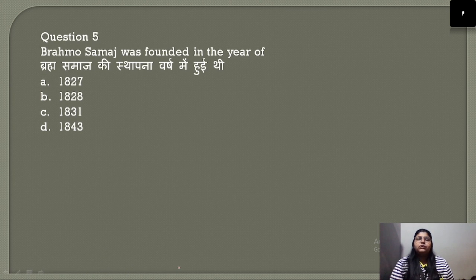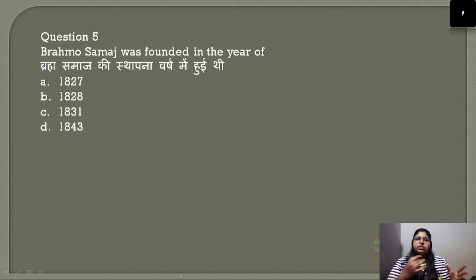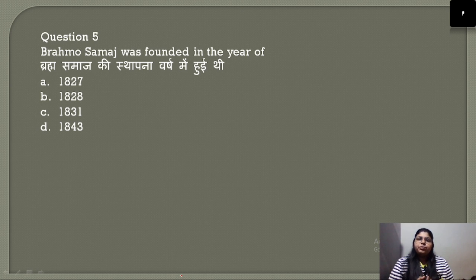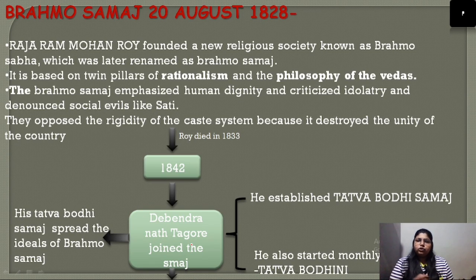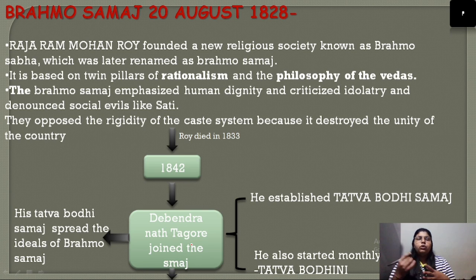Question number 5: In which year was the Brahmo Society founded by Raja Ram Mohan Roy? We know that Brahmo Society was established in 1828. The correct answer is option B. Brahmo Society was established by Raja Ram Mohan Roy so he could reach his thoughts and ideology to the people.